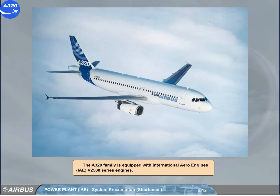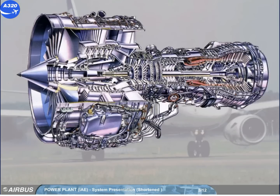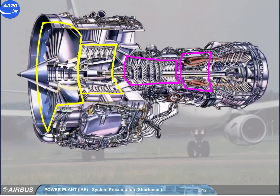The A320 family is equipped with International Aero Engines, IAE, V2500 series engines. Like most engines today, this engine comprises a low-pressure compressor stage, a high-pressure compressor stage, a combustion chamber, and a turbine stage.